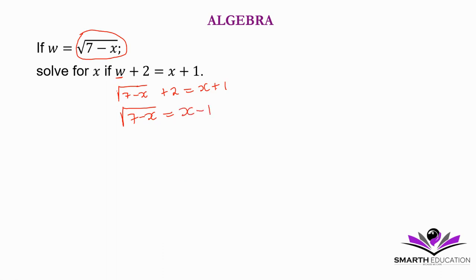Now to get rid of the square root, we square both sides. Square root of 7 minus x squared equals x minus 1 squared. Then we get 7 minus x.